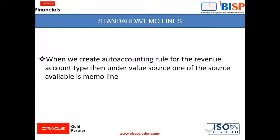Standard or Memo Lines. When we create an auto accounting rule for the revenue account type in the application, under the value source, one of the sources available is memo line, and it is available only for the revenue account type. We can give a value source as memo line, so this is one of the uses for which we can create a standard or memo line in the application.